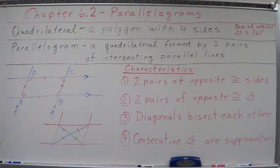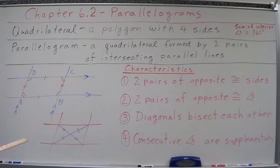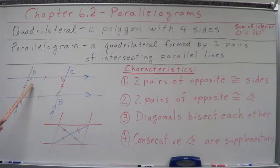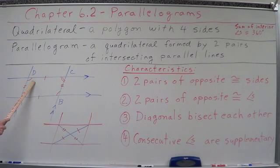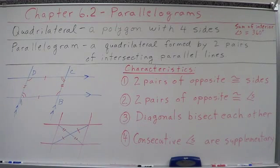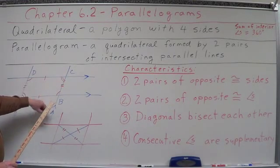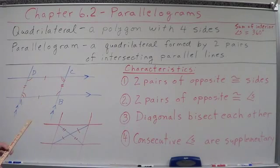Number four: consecutive angles are supplementary. This is because they are consecutive angles of parallel lines cut by a transversal. Take AD as a transversal of lines AB and DC — those two are same-side interior angles, therefore supplementary. The same-side interior angle theorem confirms this. So: angle A and D are supplementary, angle D and C are supplementary, angle C and B are supplementary, and angle B and A are supplementary. You need to know all four characteristics.